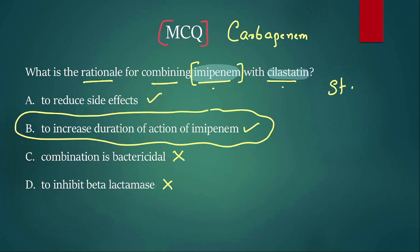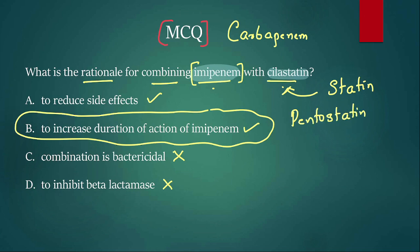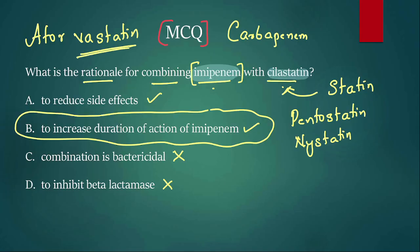When a drug ends with '-statin,' don't confuse it with atorvastatin. Cilastatin is different — it is combined with imipenem. Pentostatin is also different — it is an anti-cancer drug. For your exam, remember 'vastatins' — these are used for dyslipidemia. Do not confuse them with other '-statin' drugs. The answer for this MCQ: it increases the duration of action of imipenem.